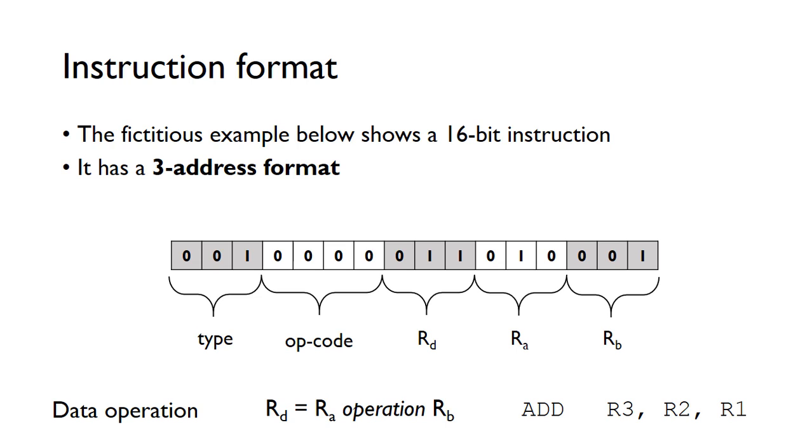Instructions have a particular format depending on the actual computer. This fictitious example below is showing a 16-bit instruction and it's got what's known as a three-address format. So we can see these three addresses here: the destination address and the two source addresses. The first three bits here tell us what type of instruction it is, whether it's a load, a store, or a data operation.